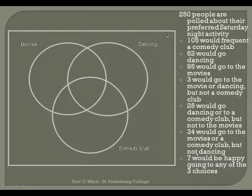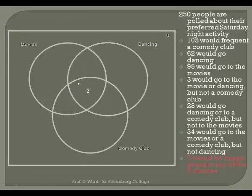Looking at the last clue: seven would be happy going to any of the three choices. That's a very clear position — right here in this center shield-shaped area. So I know that seven people chose all three: movies, dancing, and comedy club.